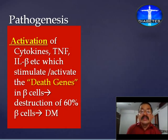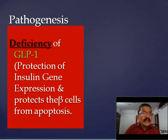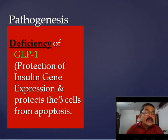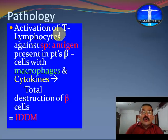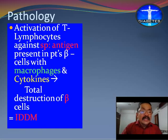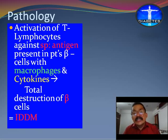Regarding the pathology of IDDM: activation of T lymphocytes against specific antigens present in the patient's beta cells, along with macrophages and cytokines, leads to total destruction of beta cells and thereby results in IDDM. When there is more than 80% destruction of the islet cells, the balance between destruction and regeneration of beta cells is disrupted, leading to IDDM. These are the basic pathology and pathogenesis of IDDM.